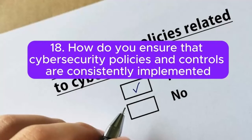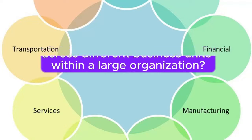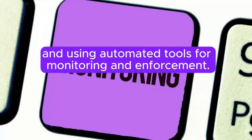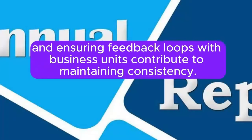Question 18: How do you ensure that cybersecurity policies and controls are consistently implemented across different business units within a large organization? Answer: Consistent implementation involves developing standardized policies, conducting regular training, and using automated tools for monitoring and enforcement. Establishing a central governance structure, conducting periodic audits, and ensuring feedback loops with business units contribute to maintaining consistency.